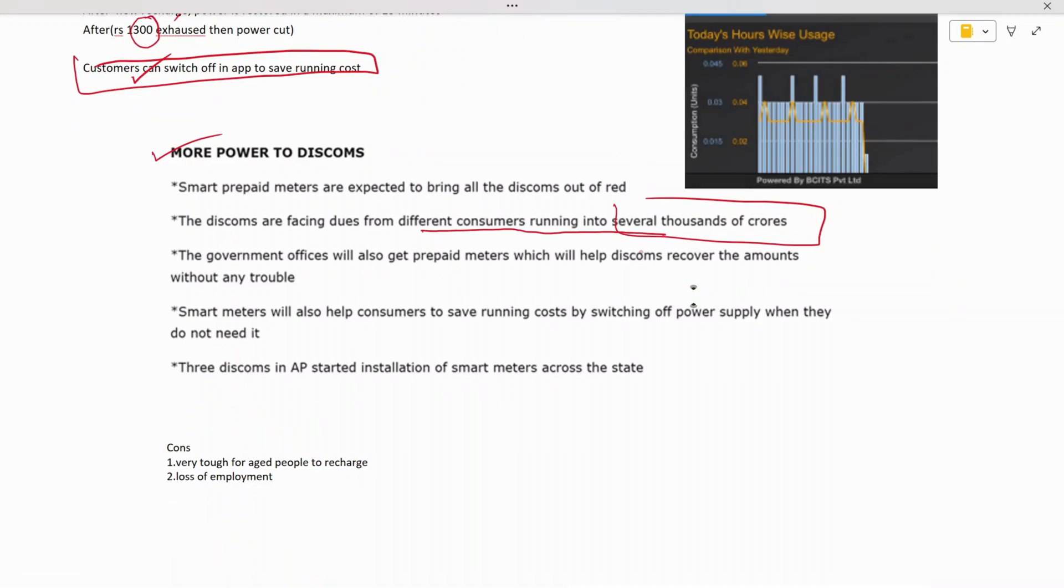There's no need for employees to take continuous metering, and there's no need to monitor all the time. Monitoring is done online, and the process of recovering funds is very simple for the government. Smart meters will also help consumers save running costs.